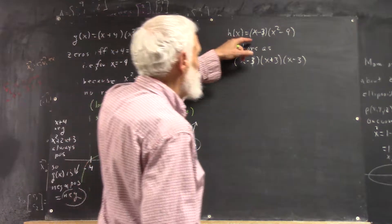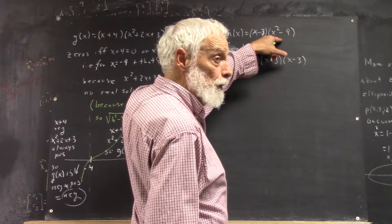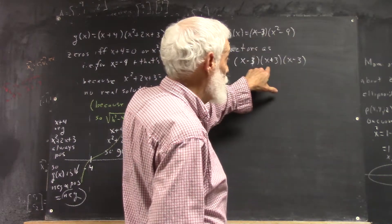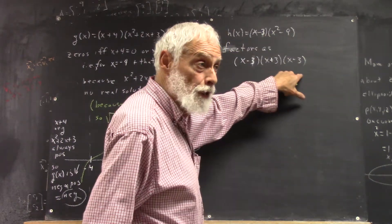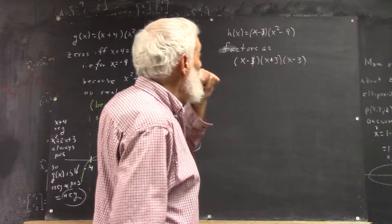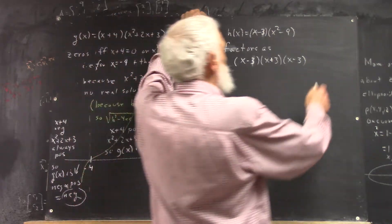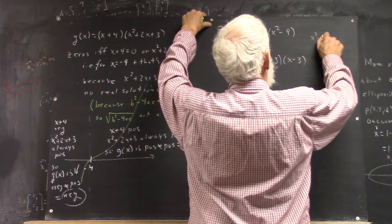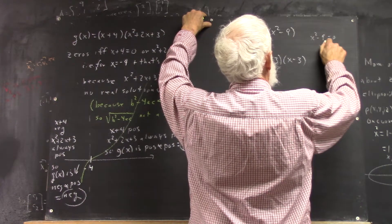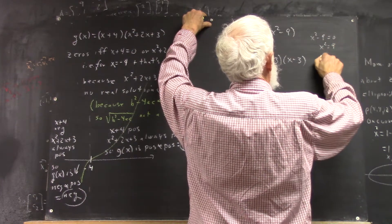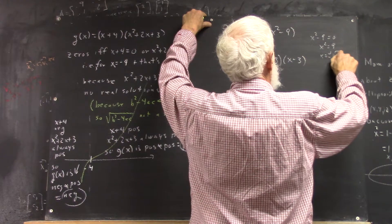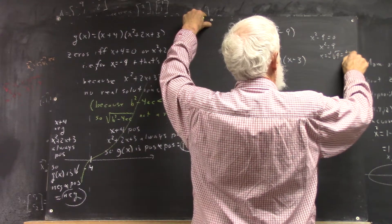h of x is x minus 3 times x squared minus 9. x squared minus 9 factors as x plus 3 times x minus 3. And if you want to solve it, x squared minus 9 equals 0, so x squared equals 9, so x is plus or minus the square root of 9, which is plus or minus 3.